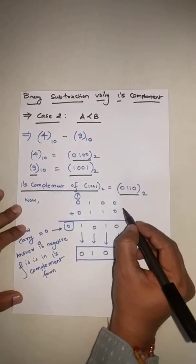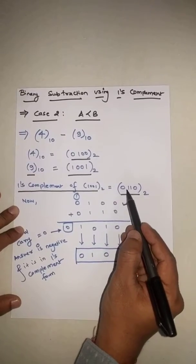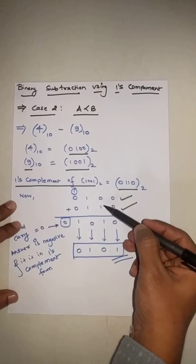Now first number 4 we have to write as it is. For second number we have to write one's complement of that number, that is 0110. So now add this: 0 plus 0 equals 0, 0, 1, 1, 1 plus 1 equals 0 carry 1, and 1 plus 1 equals 0, 0, it is 1.